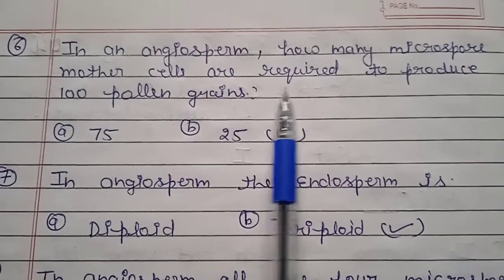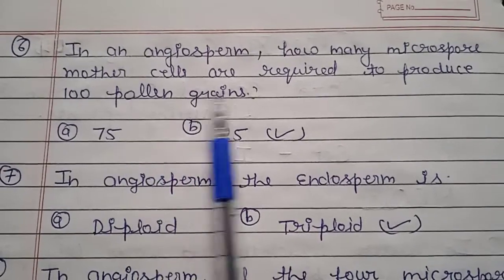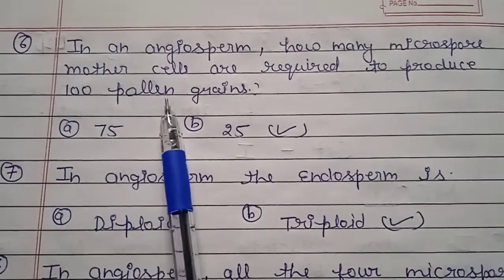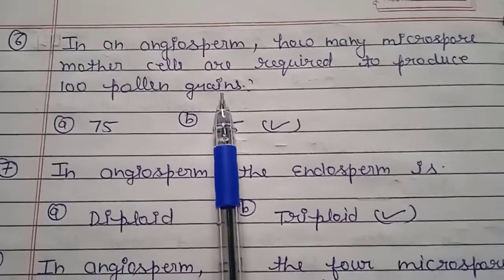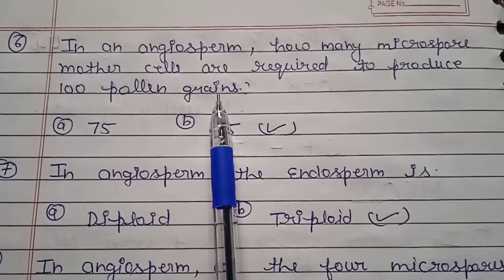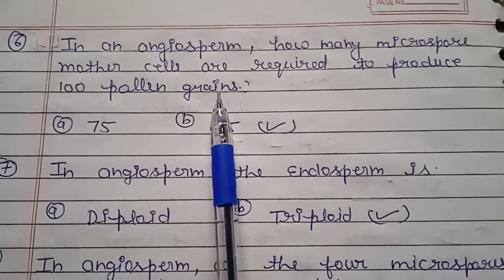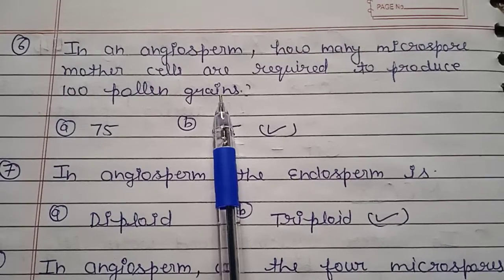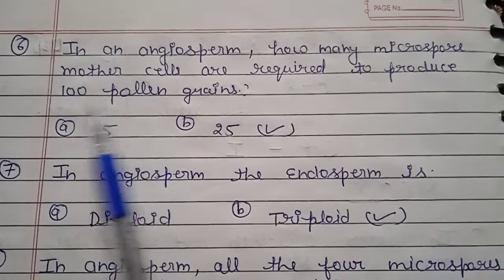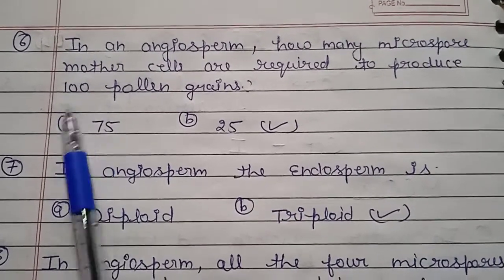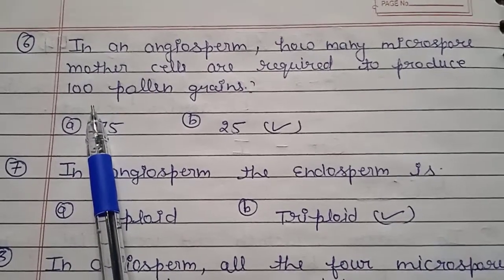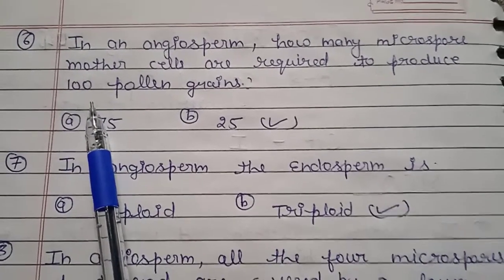Question number 6: in an angiosperm, how many microspore mother cells are required to produce 100 pollen grains? Each microspore mother cell produces 4 pollen grains, so 100 divided by 4 gives us 25. The right answer is 25.